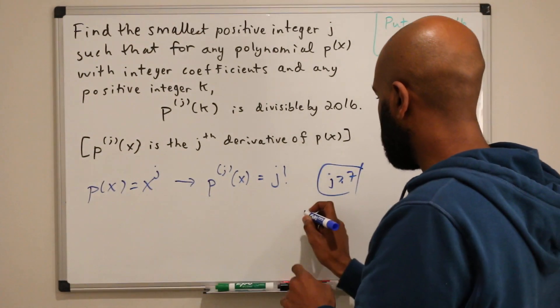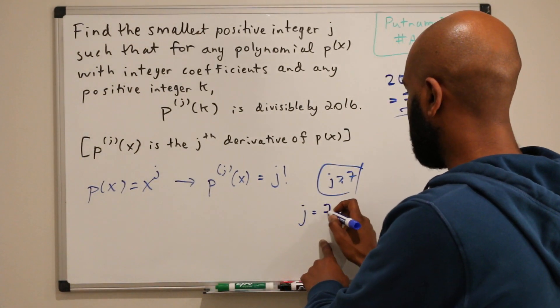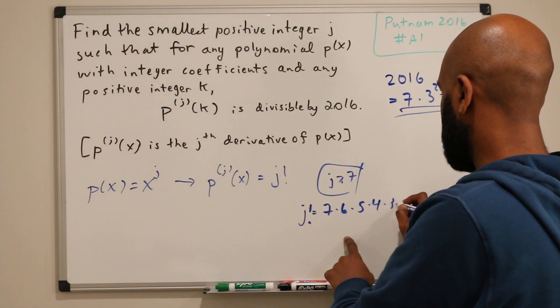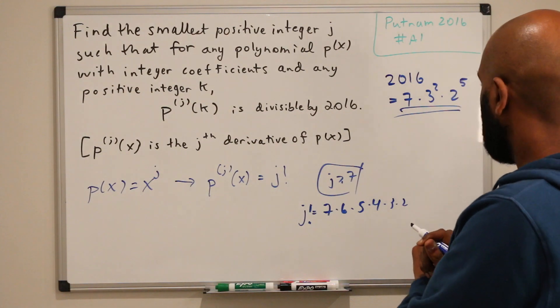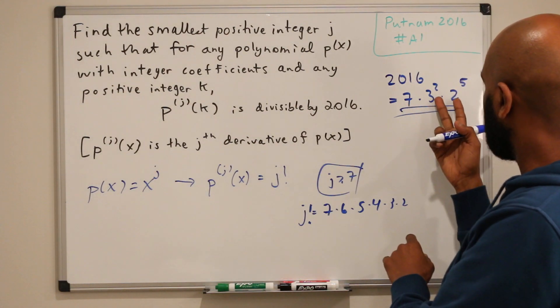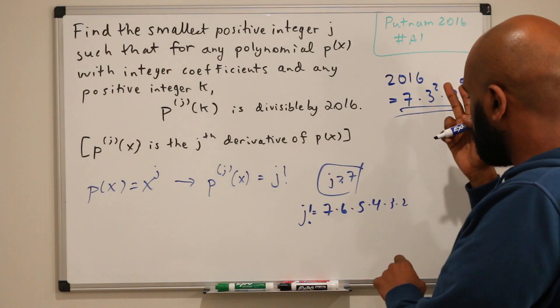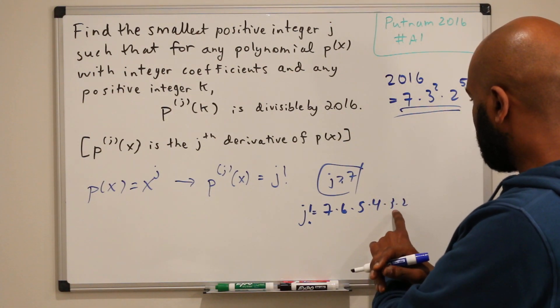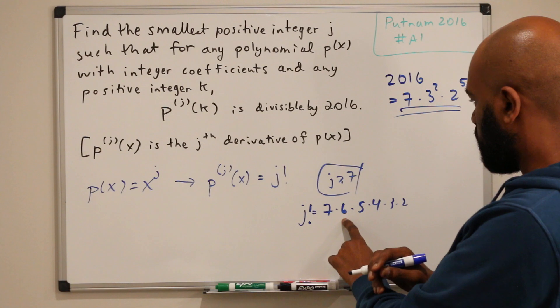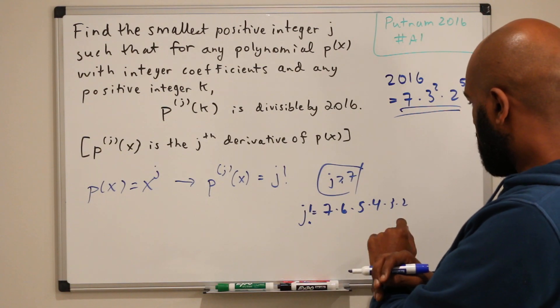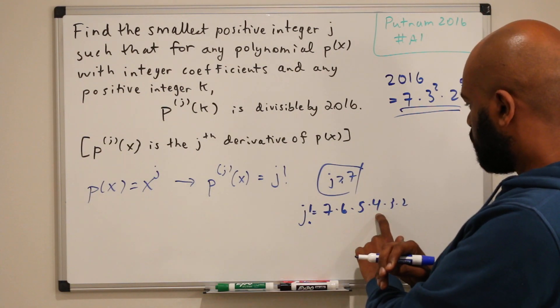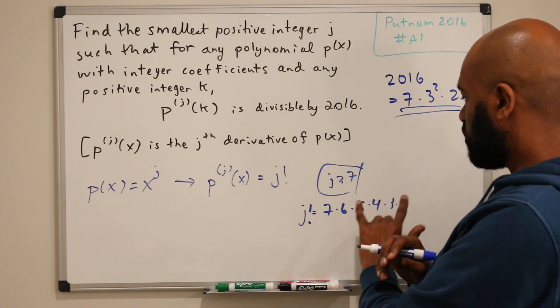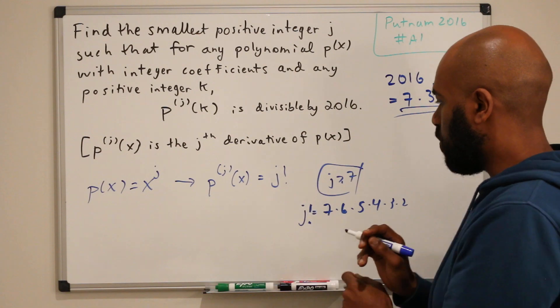If j were 7, then we'd have 7 factorial being 7 times 6 times 5 times 4 times 3 times 2. Let's see if this has enough copies of 3 and 2 for 2016 to divide it. So we do have 2 copies of 3. Now let's look at 2. We have 2 factors of 2 here and 1 here for a total of 4. So it's not enough.